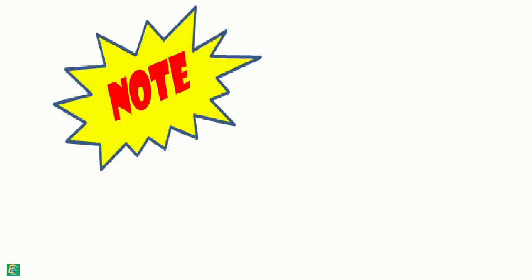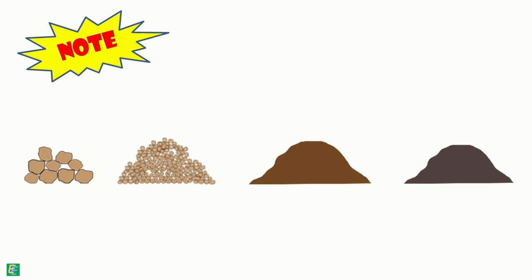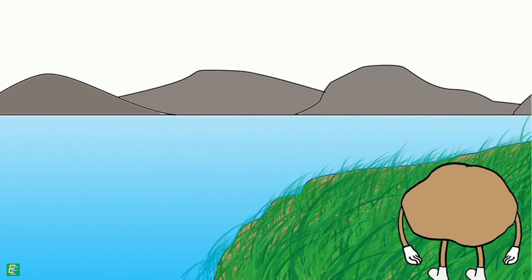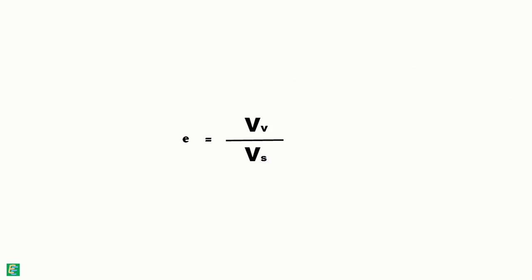We should note here that every soil will contain some voids in it. It is not practically possible in the field, I am not sure about the lab, to have voidless soil. Hence, there will always be some non-zero value of volume of voids, so void ratio can never be equal to zero and will always be greater than it.